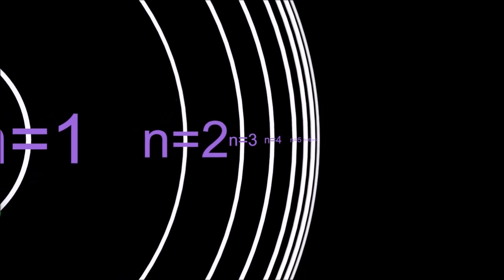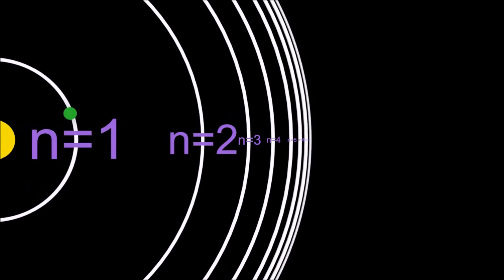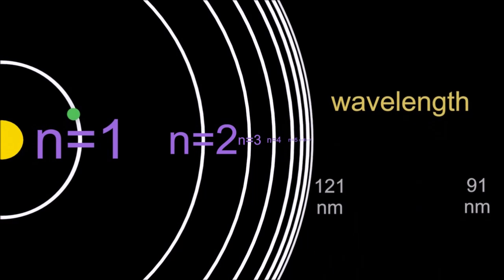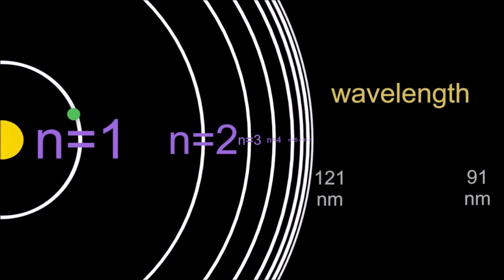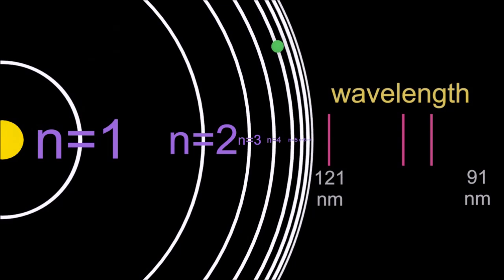If the electron is excited and then falls back to the n equals 1 level, it releases a photon of ultraviolet light. As it's excited with greater energy and comes back down to n equals 1, you can see the line spectra being produced.